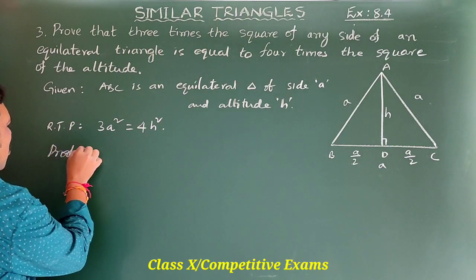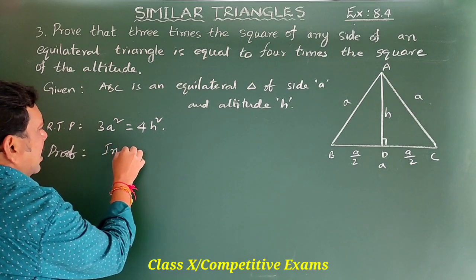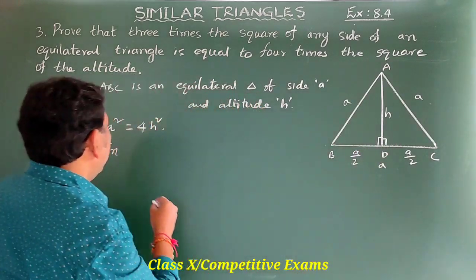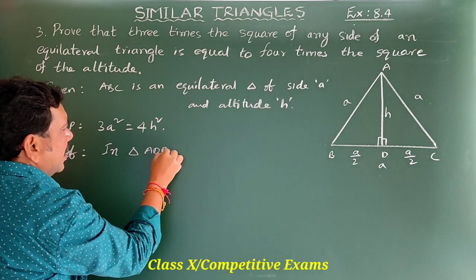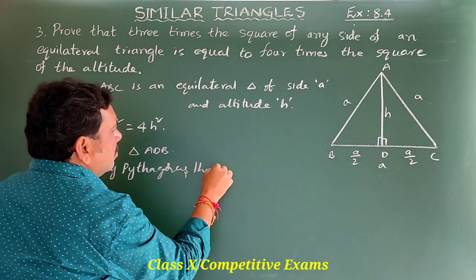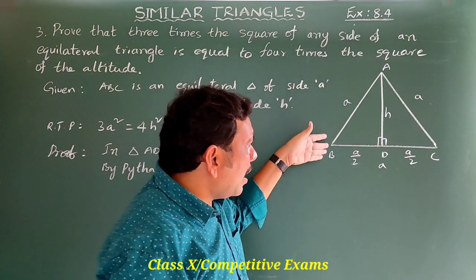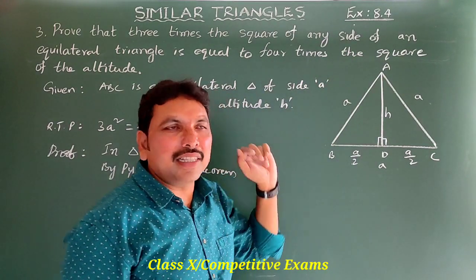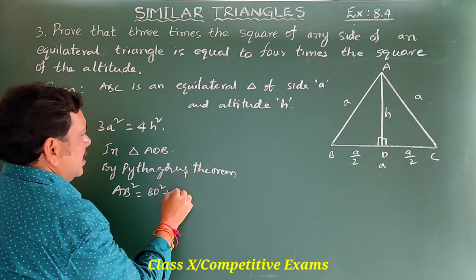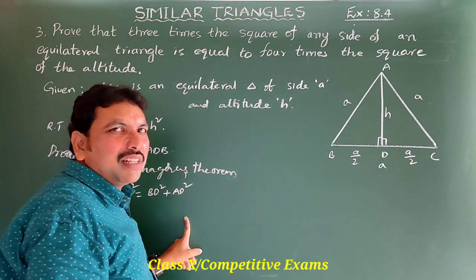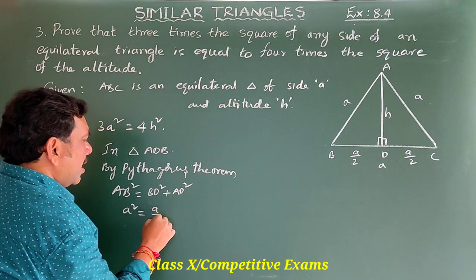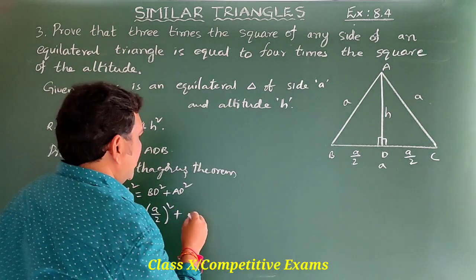Proof. Take triangle ADB. In triangle ADB, by Pythagoras theorem: AB² = BD² + AD². So A² = (A/2)² + H².